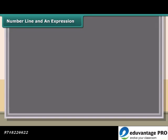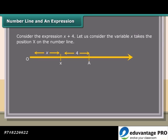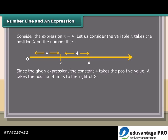Number line and an expression: consider the expression x plus 4. Let us consider the variable x takes the position x on the number line. Since the constant 4 takes a positive value, point A takes the position 4 units to the right of x. If the expression is x minus 4, the position A will be to the left of x.